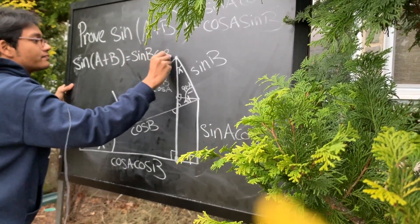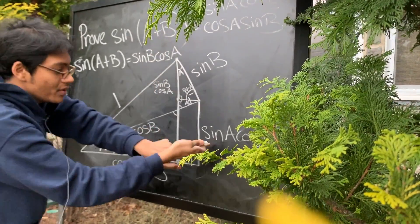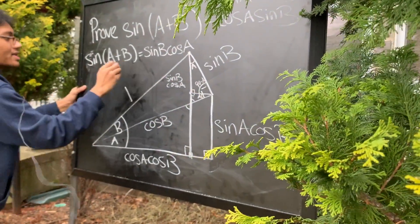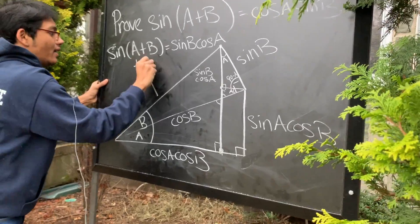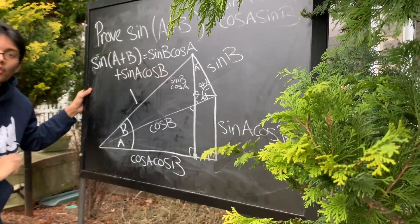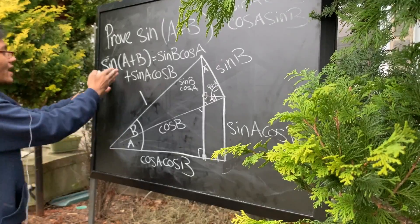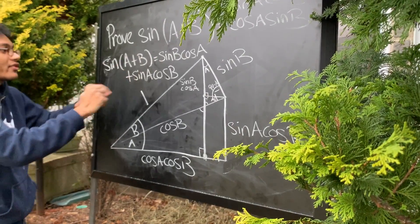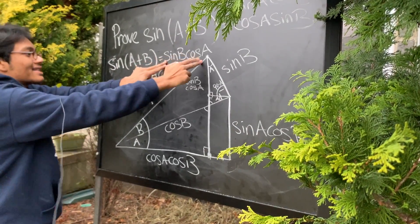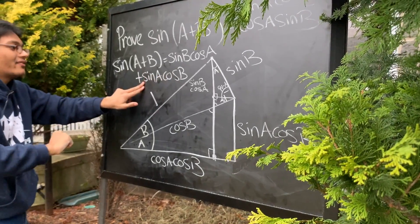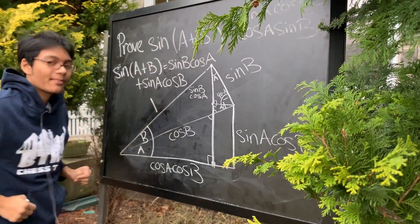And what's this leg? Well, you can see what this leg is. It's sine of A cosine of B, plus sine of A cosine of B. And there you go, ladies and gentlemen. We've just proved the sum of angles formula for sines. Sine of A plus B is sine of B cosine of A plus sine of A cosine of B. Exact match. Exact match.